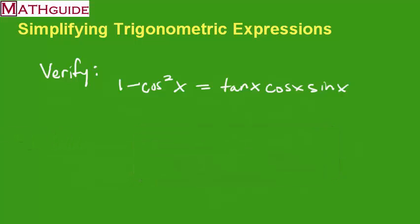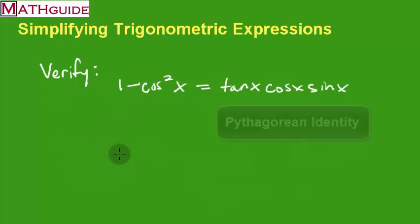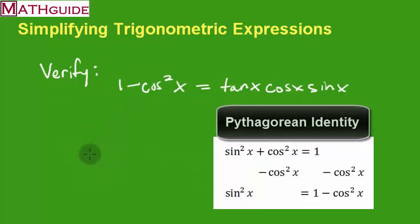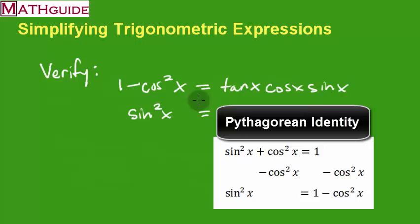Right off the bat, I can see that the left side of this equation is just an adaptation of our first trigonometric identity — it's just sine squared x. So I cleaned up the left side immediately.